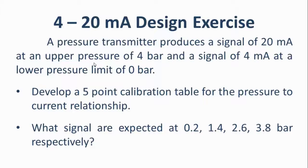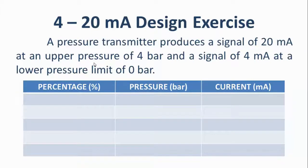We have a design exercise here. A pressure transmitter produces a signal of 20 mA at an upper pressure of 4 bar, and a signal of 4 mA at a lower pressure limit of 0 bar. We need to develop a 5-point calibration table for the pressure-to-current relationship. We'll create a table with columns for percentage, pressure in bar, and current in mA.